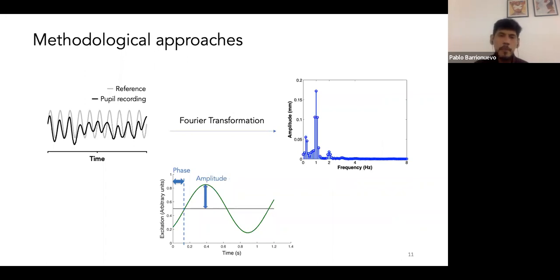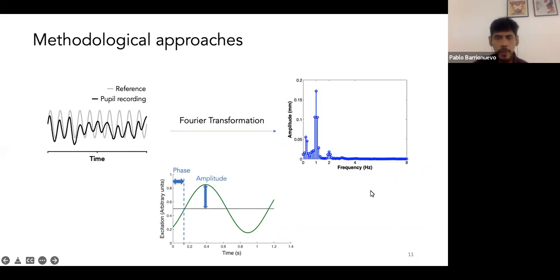Instead of using a pulse to elicit the pupil light reflex as in previous studies, we used a flickering stimulation — not a square wave, but a sine wave stimulation. This is because we used Fourier transformation to analyze the response in the frequency domain. If the response is a pure sinusoidal, we should have just one component at the frequency of the stimulation. But our results show not only that component, but also other components. Using this approach, we can analyze the amplitude and phase of the pupil light response to flickering stimulation.